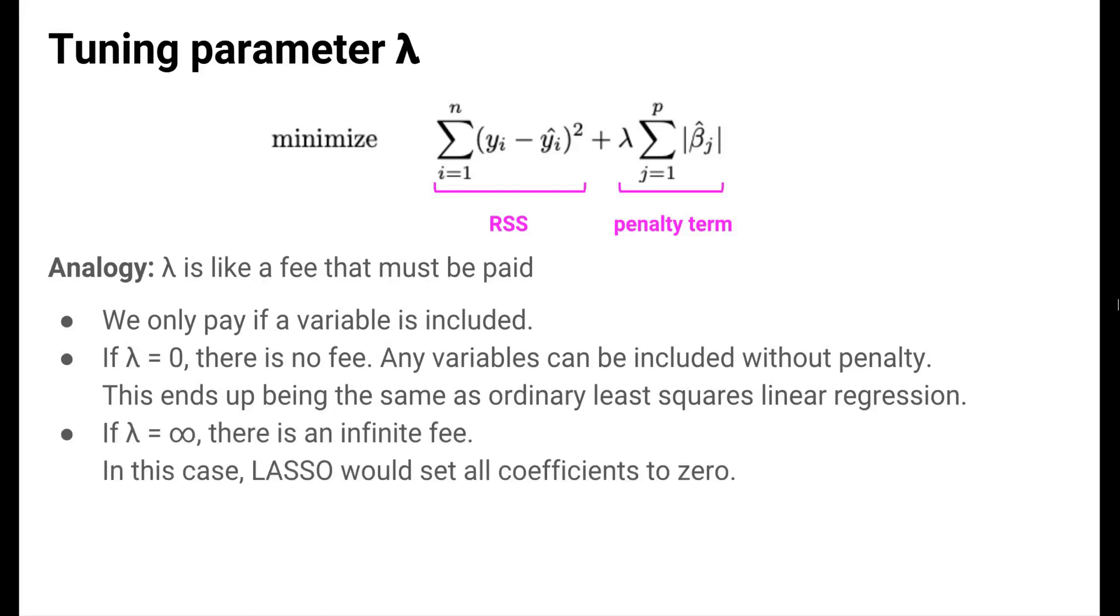On the other hand, if lambda is infinite, then we pay an infinite fee each time a variable is included in the model. To minimize the penalized sum of squared residuals then, we'd have to not include any variables in the model, because even including just one would incur an infinite penalty. This is shrinkage to the extreme because all coefficient estimates would be shrunken to zero. What we want is a lambda that's in between, some intermediate fee that discourages us from adding a very weak predictor, one with a small coefficient magnitude, but a fee that also does not incur too much penalty for our strong predictors. Remember that because of that sum in the penalty term, all predictors get penalized. We want to choose lambda carefully so that the best model is chosen.